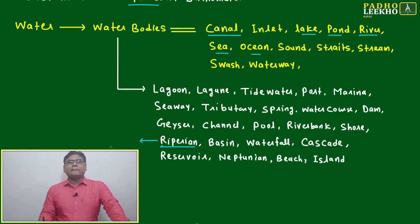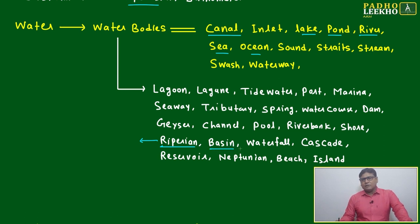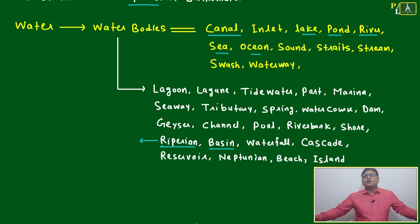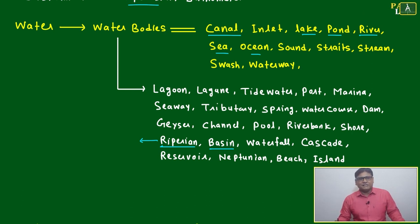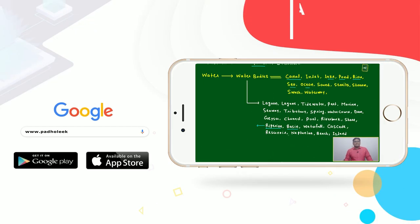Riparian is a common word — wherever agriculture will happen, that field just on the side of the river or riverbank is called riparian. Basin — mainly it will be a river basin. When flood or rainy season is there, the capacity of the river to surge up to a certain area — that area is called the basin or river basin. Water will not always go up to that point, but during rainy season it will. Other terms include waterfall, cascade, and reservoir.